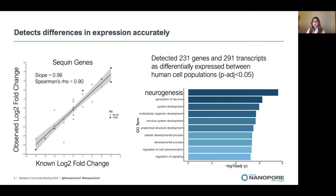Although fold changes are measured accurately, not many of the sequin genes or transcripts were identified as significantly differentially expressed with an adjusted p-value less than 0.05. This is likely due to the low number of reads, making it more difficult to reach that significance threshold. From the two human cell populations, we found 231 genes and 291 transcripts were differentially expressed between our two groups.